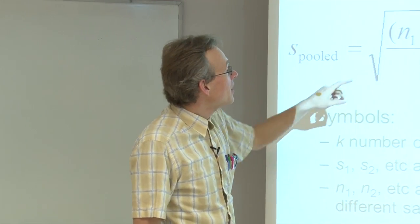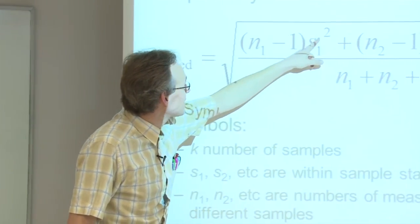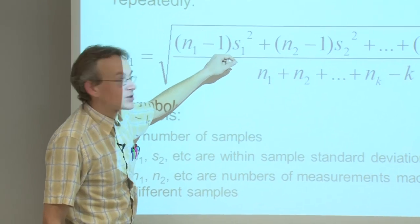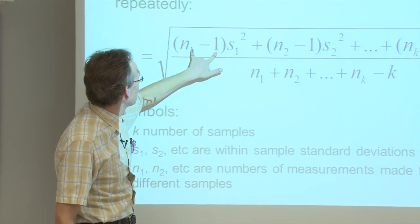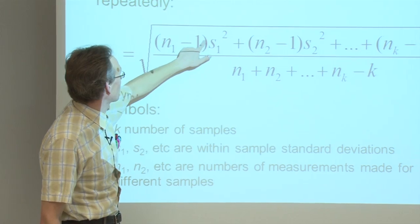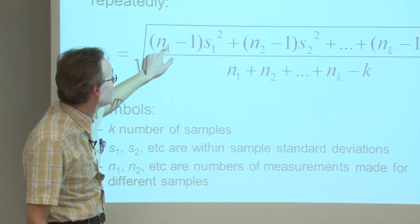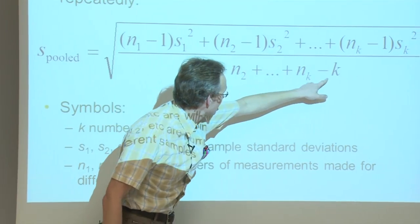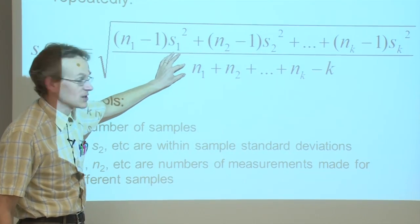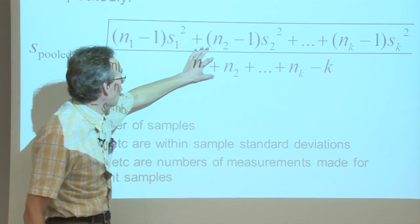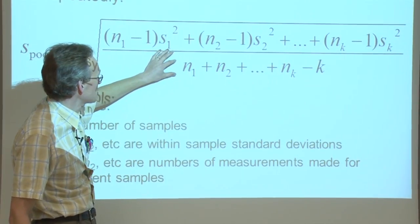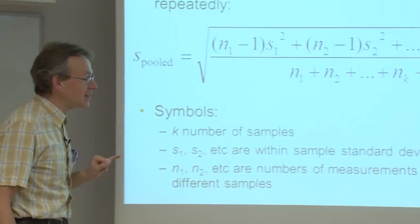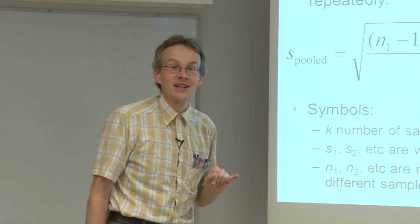And n stands for the number of parallel measurements made with those samples. All these standard deviations that we get with individual samples, we take to the square, multiply by the number of parallel measurements that were made minus 1, add all of them up, and then divide by this kind of number, which is in fact the sum of all the parallel measurements numbers minus the number of samples, and what we eventually get is the pooled standard deviation.